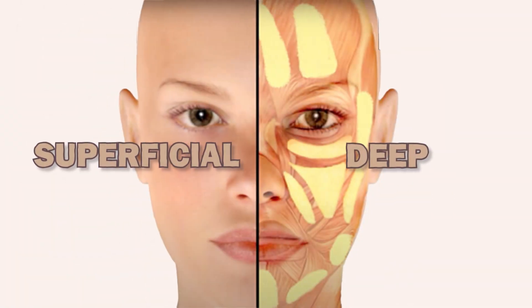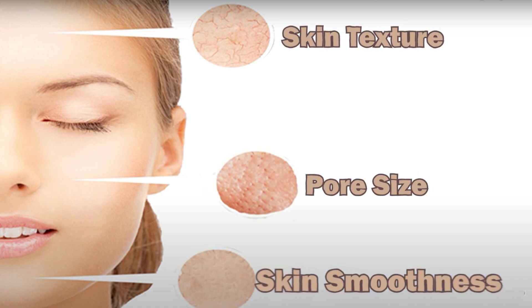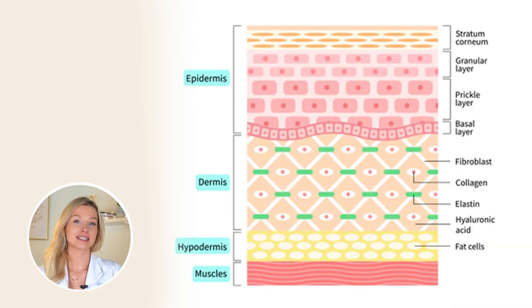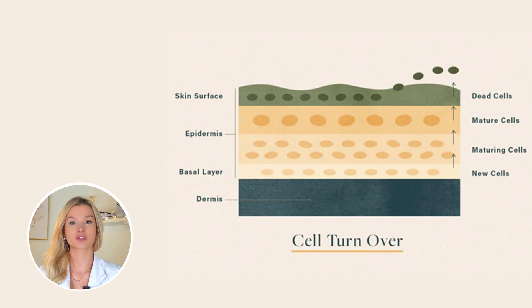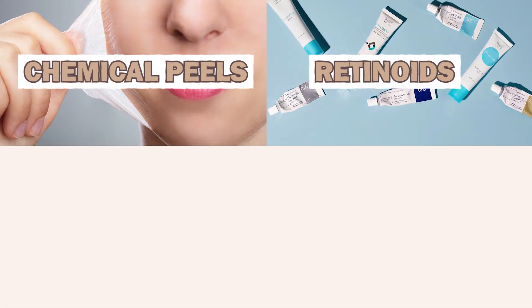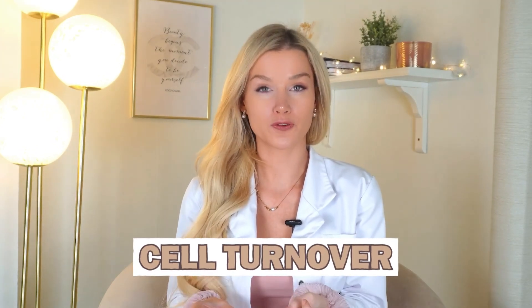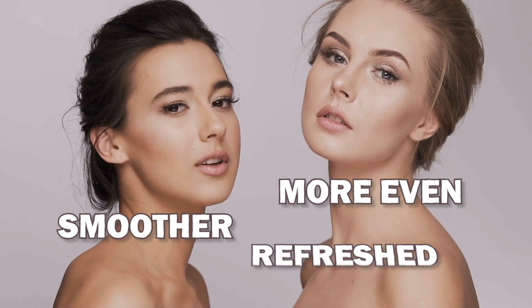We can categorize facial aging into two categories: superficial and deep. Let's start by discussing superficial aging. Superficial aging concerns the skin surface, including skin texture and tone, the visibility of pores, and how smooth our skin looks overall. When we are young, our skin surface consists of newer skin cells. But as we age, we accumulate more dead skin cells on the surface, and our skin cells don't renew as rapidly, resulting in a duller and less even complexion. Chemical peels, retinoids, retinol, lasers, and microneedling can be beneficial because they help increase cell turnover and exfoliate older cells, making the superficial skin texture smoother, more even, and more refreshed.